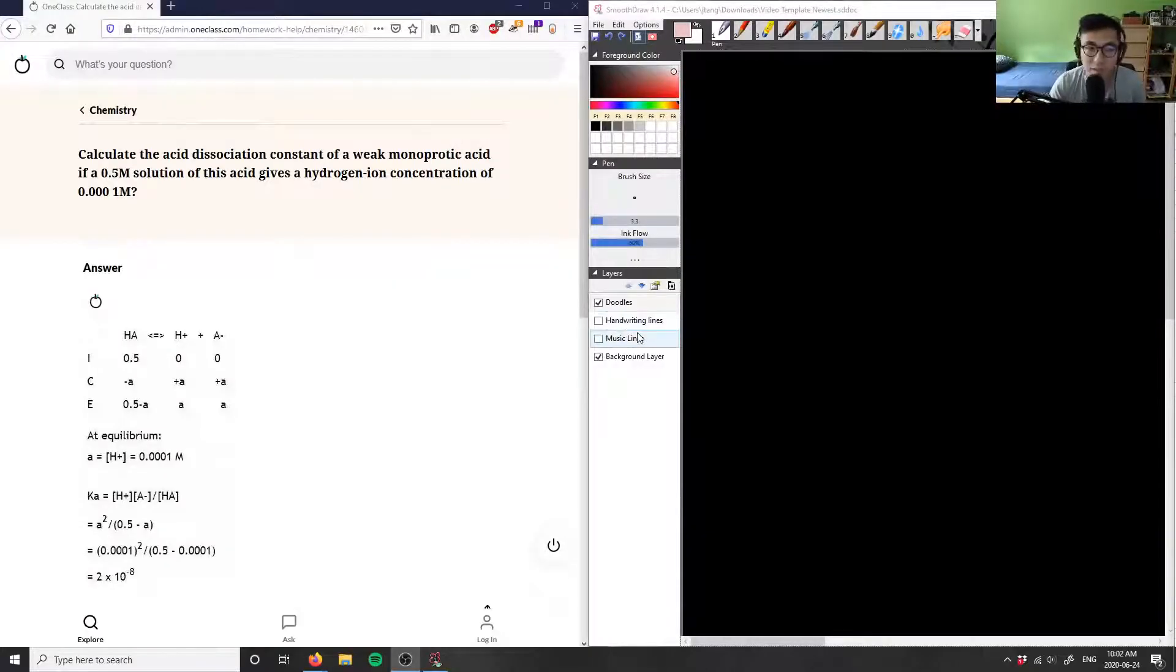All right, our first problem here says this: calculate the acid dissociation constant of a weak monoprotic acid if a 0.5 molar solution of this acid gives a hydrogen ion concentration of 0.0001 molar. So how do we do this problem?